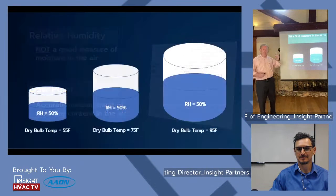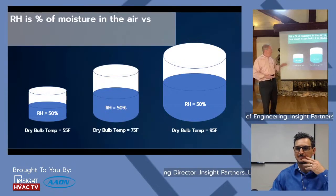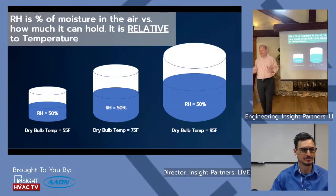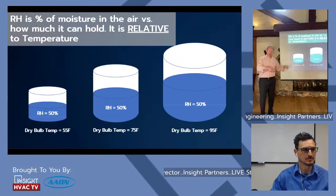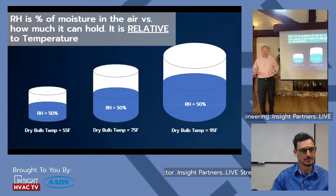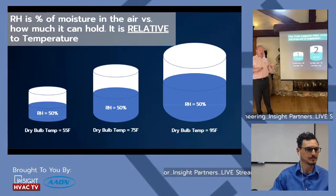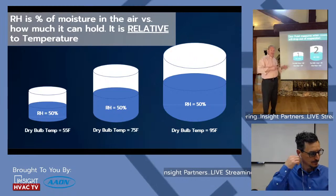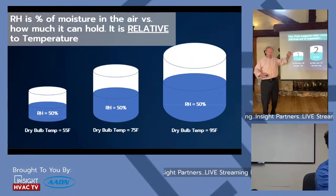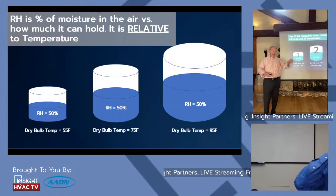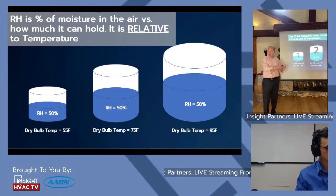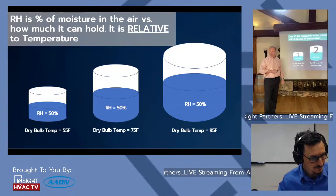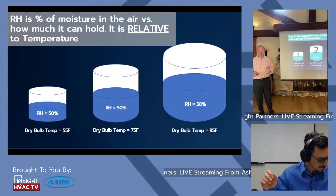Relative humidity is the percent of moisture in the air versus how much it can hold. So at dry bulb temperatures of 55, 75, or 95 degrees, you can still have 55% relative humidity but with very different actual moisture content — especially here in Orlando. Dew point measures the temperature at which moisture will drop out of suspension. We've got to get that moisture to drop out of suspension — like condensation on a cold glass of ice water. That's the temperature at which it drops, but the quantity of moisture is completely different.